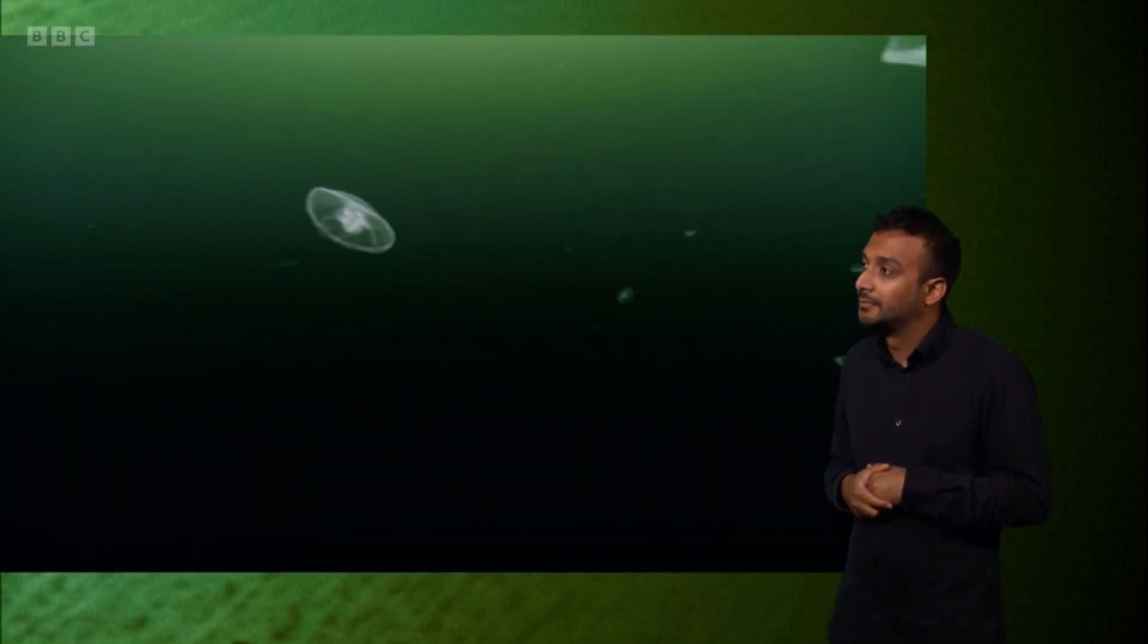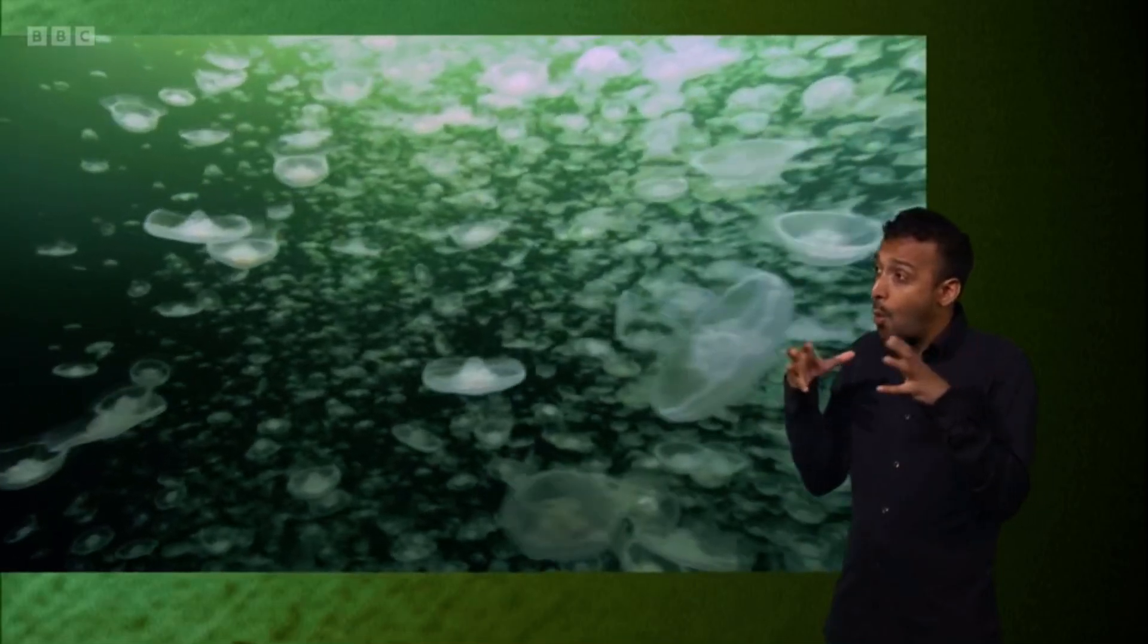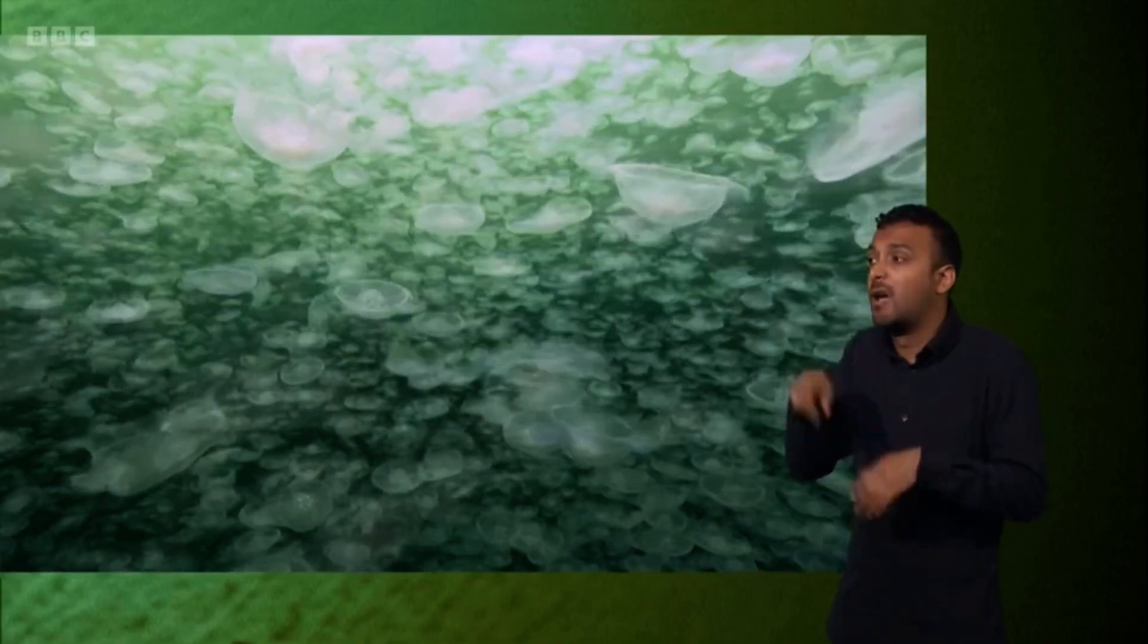Sometimes, when food is especially plentiful and water temperatures are just right, moon jellies form colossal crowds, known as blooms. They may live a nomadic life, but it's anything but lonely.